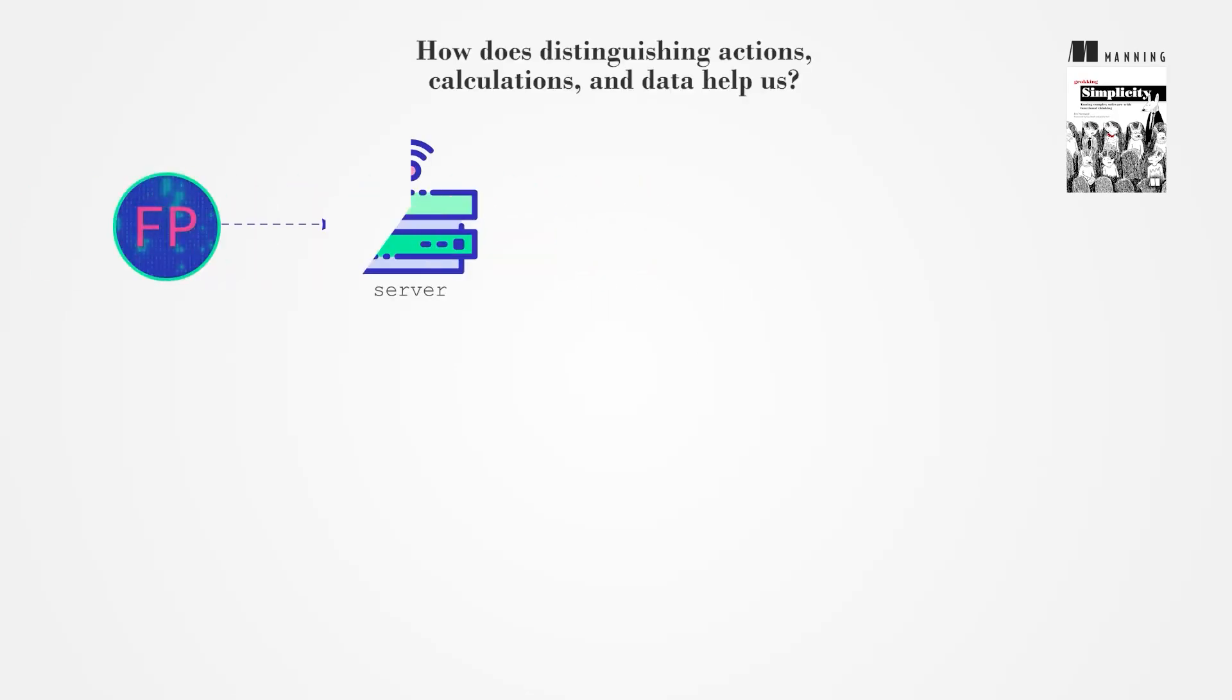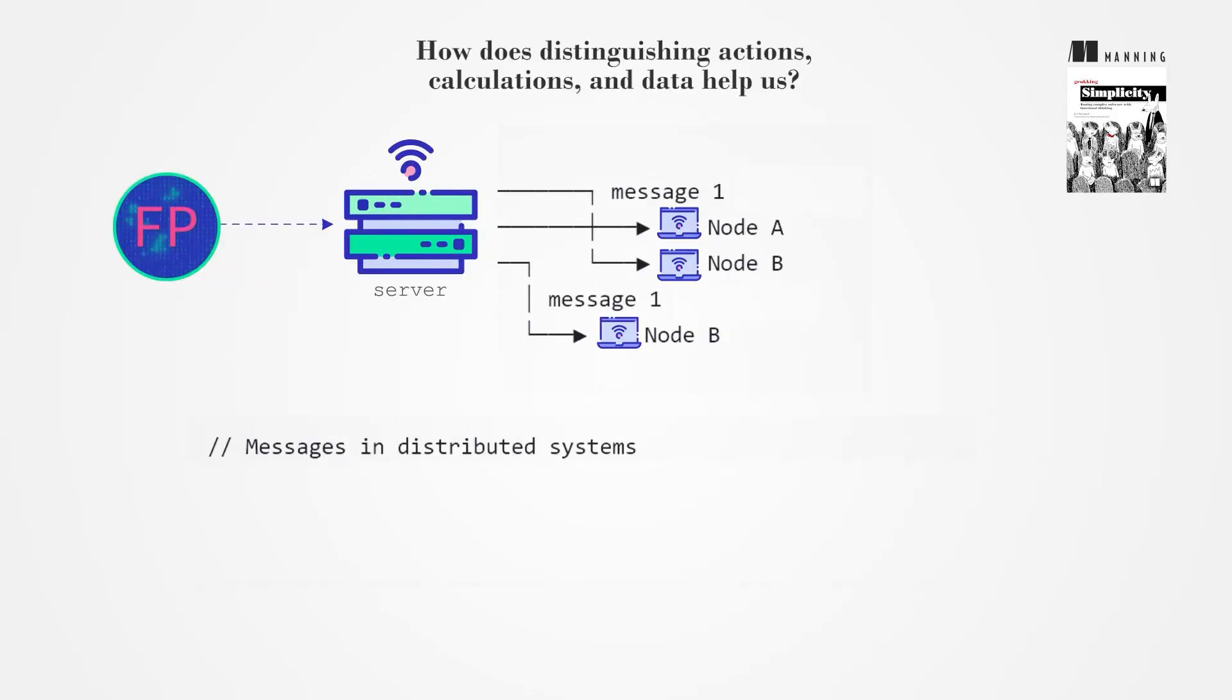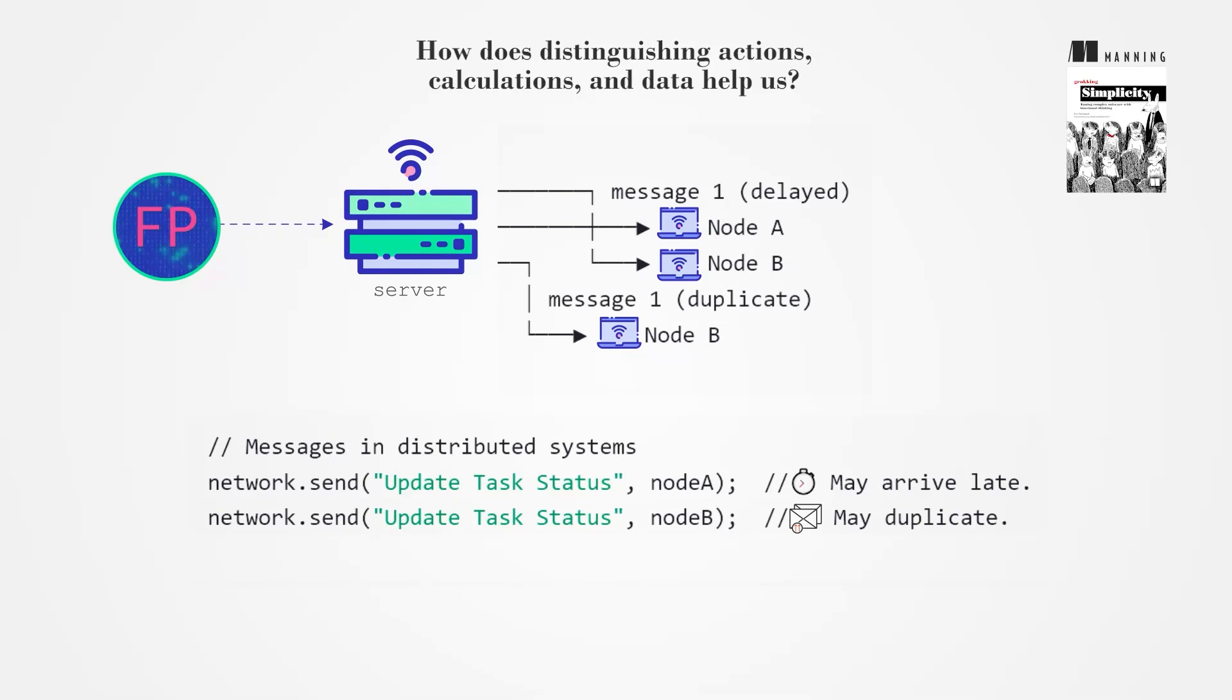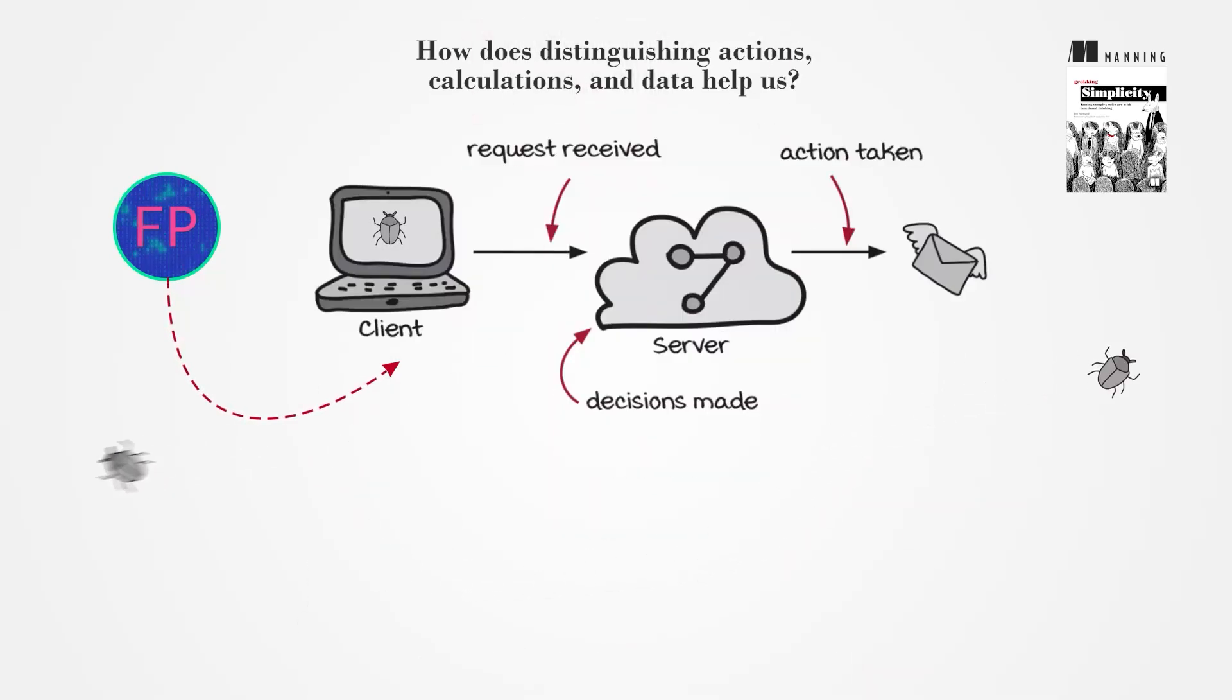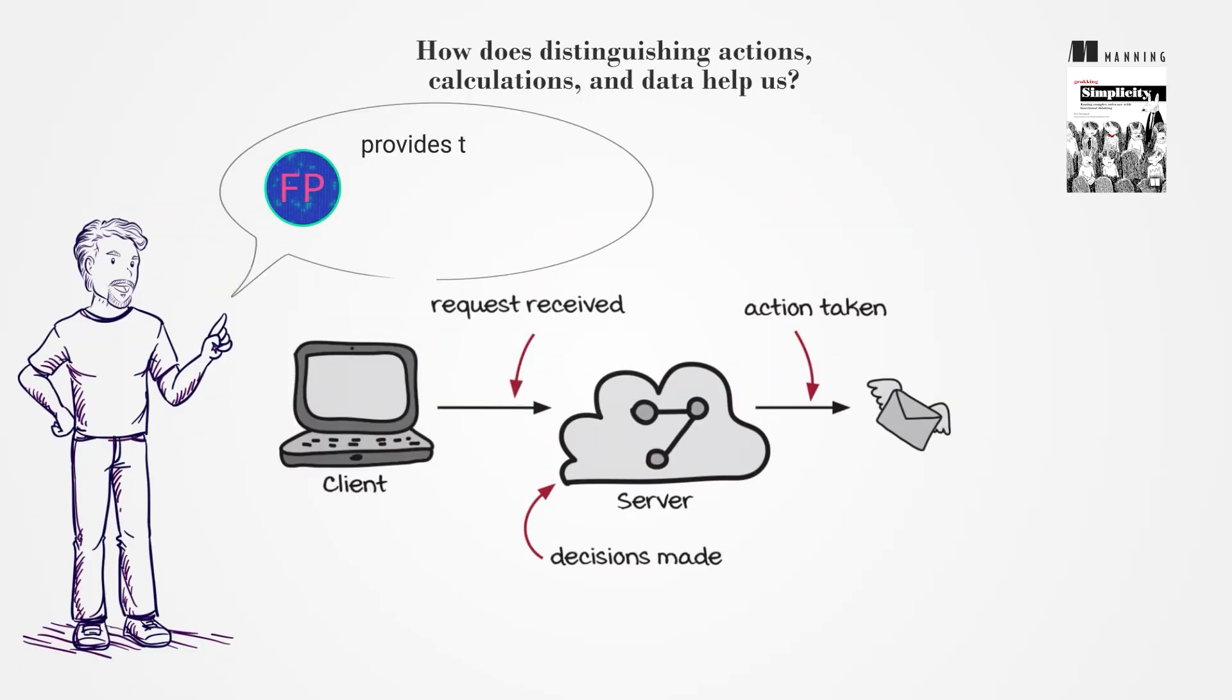FP excels in distributed systems, where messages can arrive out of order, be duplicated, or not arrive at all. By moving code into data and calculations, dependency on execution timing is reduced, minimizing bugs. FP provides tools to manage actions safely, allowing more focus on critical actions.